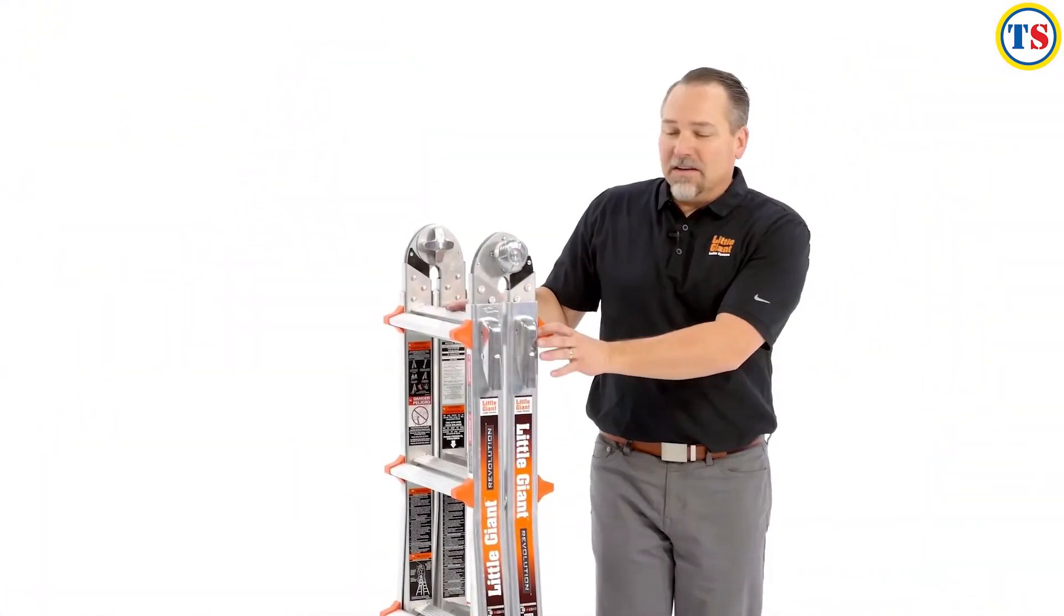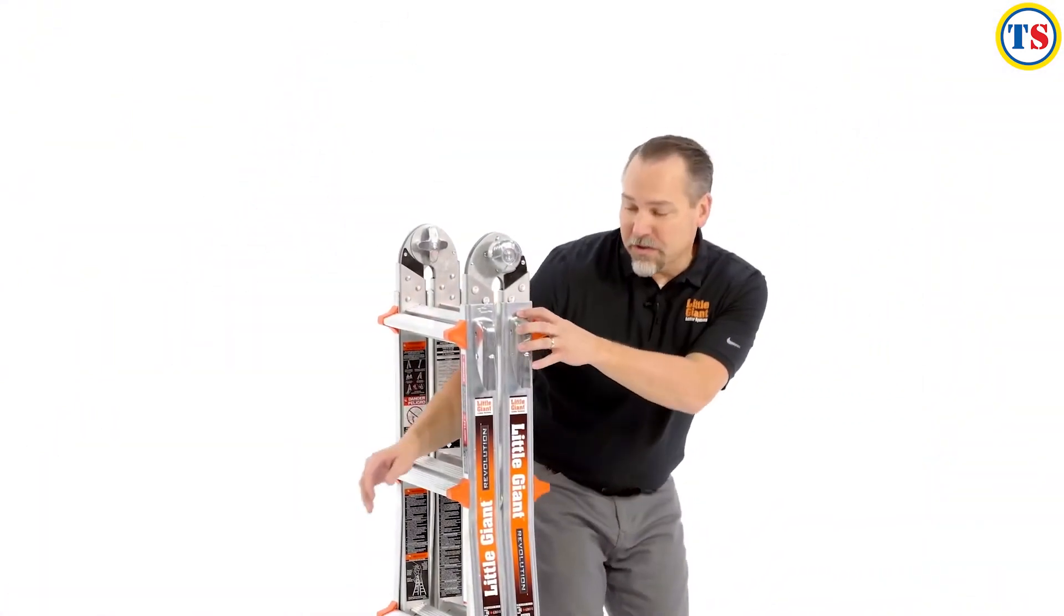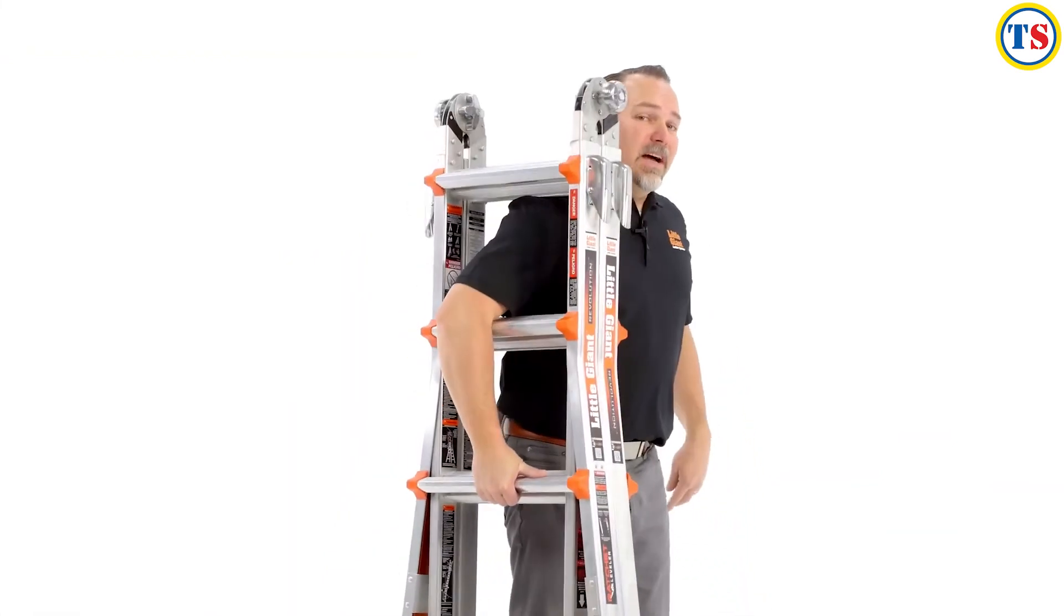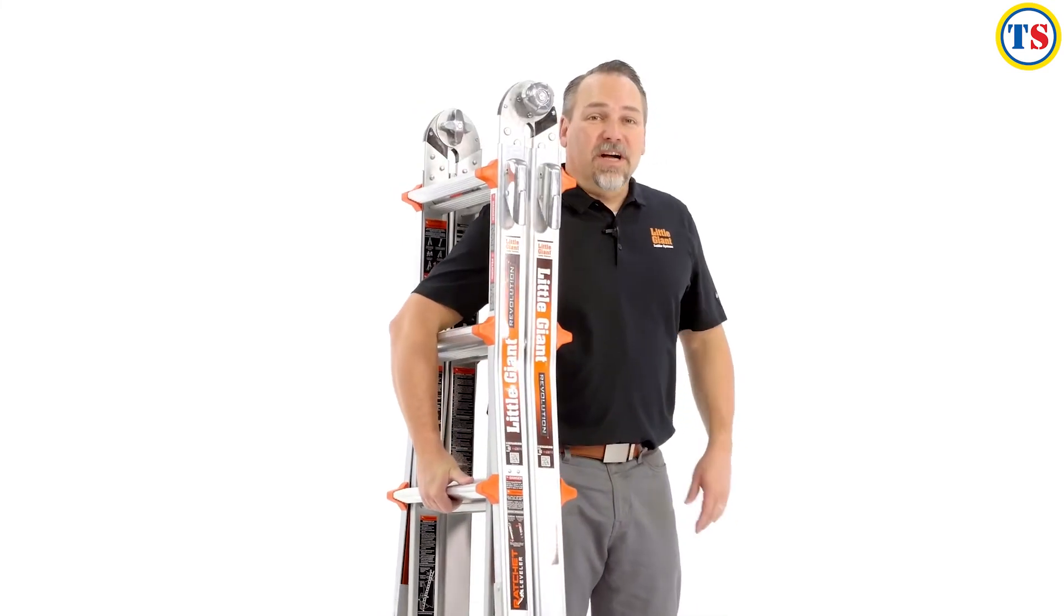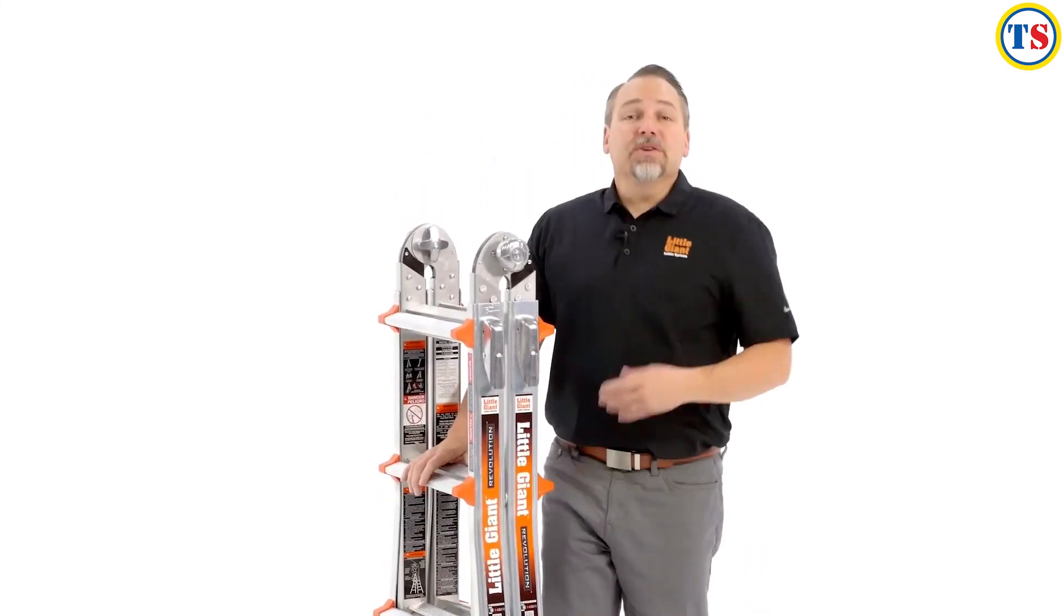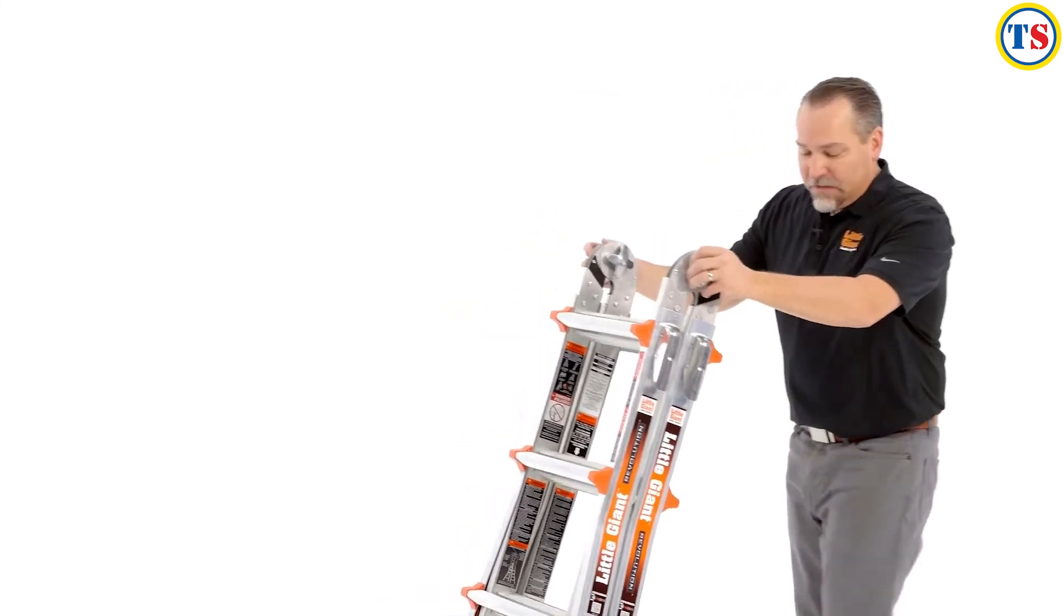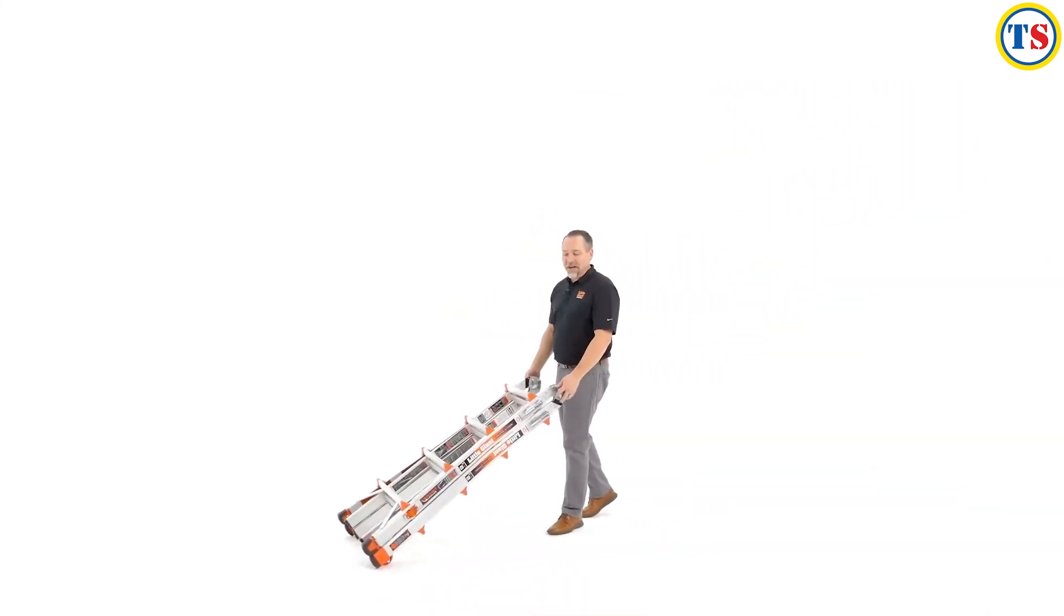To transport the ladder, simply use your shoulder. Reach through the ladder with your dominant hand on the other side. Lift with your legs, not your back. Now you're ready to go to your next job. If you're going to use the wheels, just tip the ladder back. You're able to wheel the ladder to your next job.